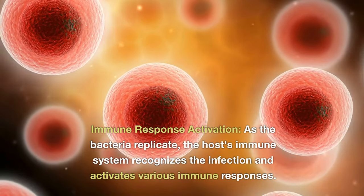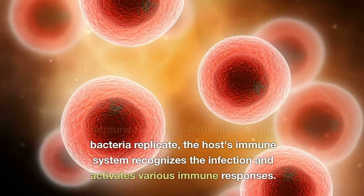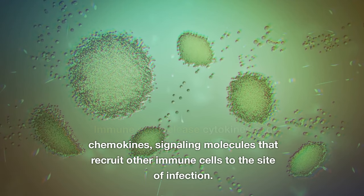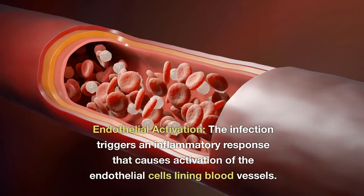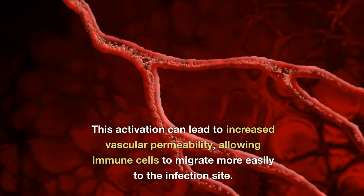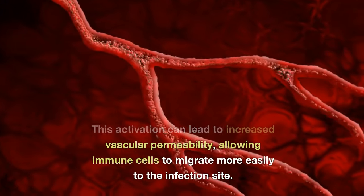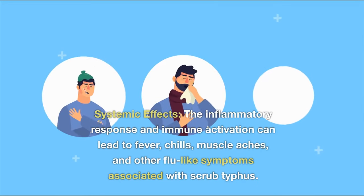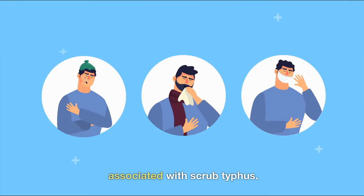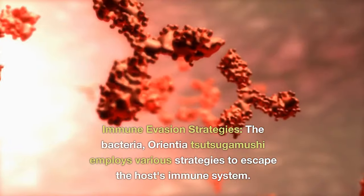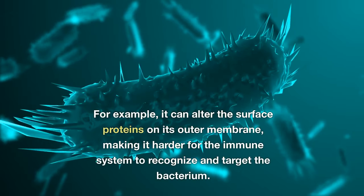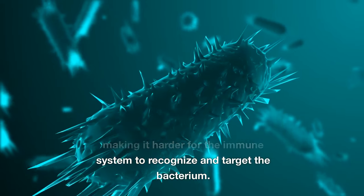As the bacteria replicate, the host's immune system recognizes the infection and activates various immune responses. Immune cells release cytokines and chemokines — signaling molecules that recruit other immune cells to the site of infection. The infection triggers an inflammatory response that causes activation of the endothelial cells lining blood vessels. This activation can lead to increased vascular permeability, allowing immune cells to migrate more easily to the infection site. The inflammatory response and immune activation can lead to fever, chills, muscle aches, and other flu-like symptoms. Additionally, Orientia tsutsugamushi employs various strategies to escape the host's immune system — for example, it can alter the surface proteins on its outer membrane, making it harder for the immune system to recognize and target the bacterium.